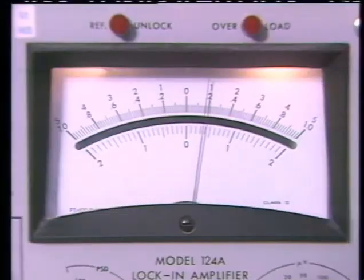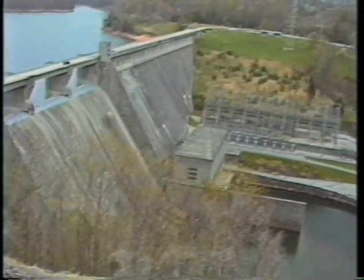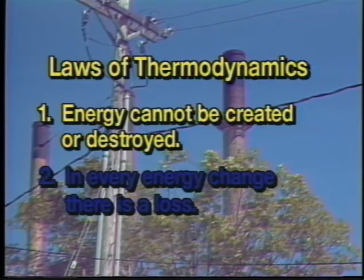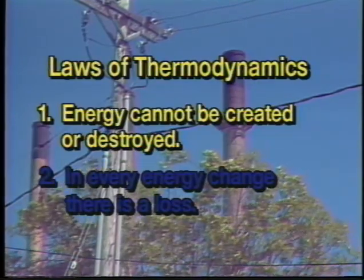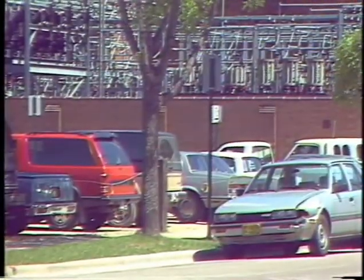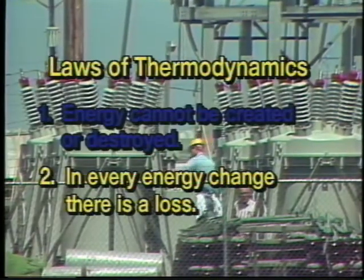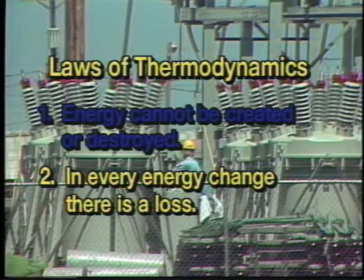One is the first law of thermodynamics. This says that energy can be changed from one form to another, but energy can never be created or destroyed. This first law is sometimes called the law of conservation of energy. The second law of thermodynamics points out that while you cannot create or destroy energy, energy always moves downhill in all its changes. That is, in every energy change, you always lose something, and that lost something is energy as random heat — useful only for warming the universe.